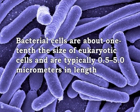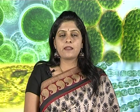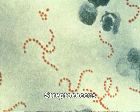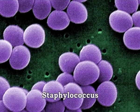Bacterial cells are about one-tenth of the size of eukaryotic cells and are typically 0.5 to 5 micrometers in length. Many bacterial species exist simply as single cells. Others associate in characteristic patterns. Neisseria form diploids or pairs. Streptococcus forms chains. And Staphylococcus groups together in bunch-of-grape clusters. Bacteria can also be elongated to form filaments.